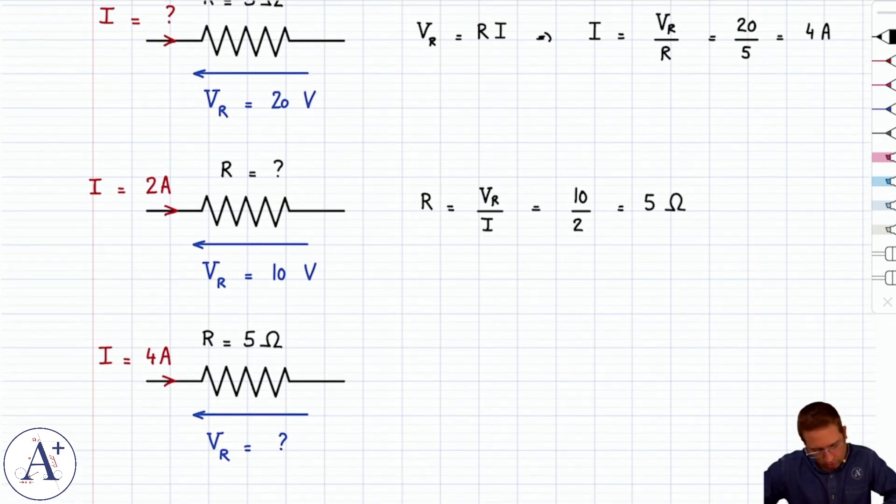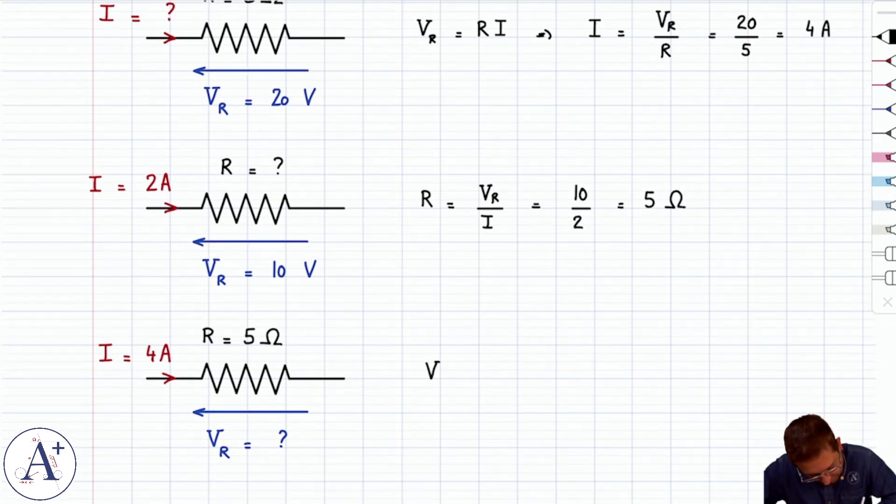And ultimately, to find the voltage V_R, we compute R times I, which is 5 times 4, and therefore 20 volts.